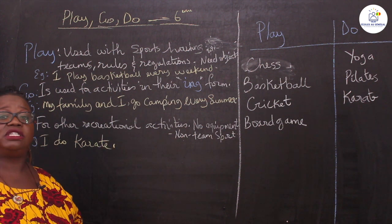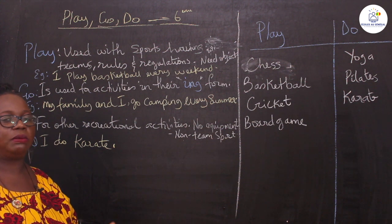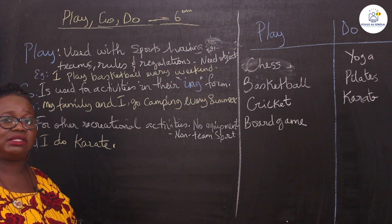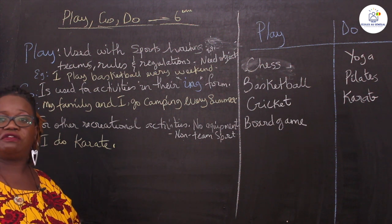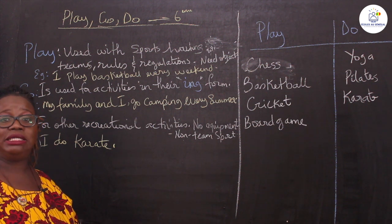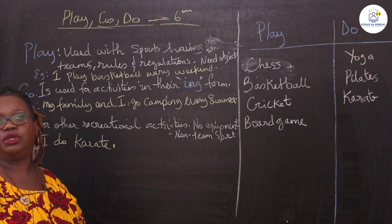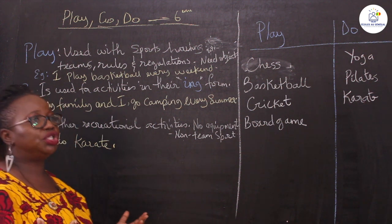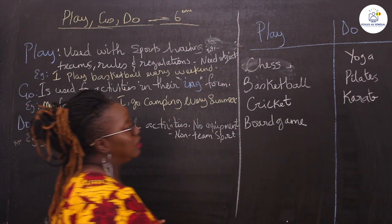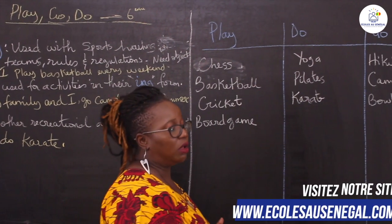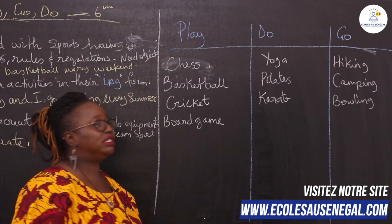Please take note of the differences between 'play', 'do', and 'go' when you talk about sports, leisure activities, or recreational activities. You should be able to know which verb to use — are you playing it, do you do it, or do you go for it? You can also say 'practice'. Here is a table of some examples of what you can use and what you can say.